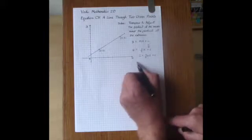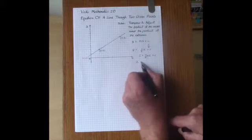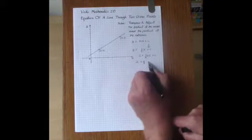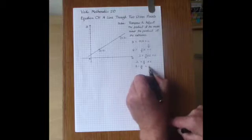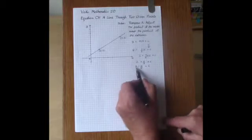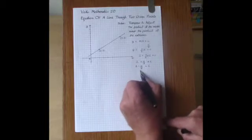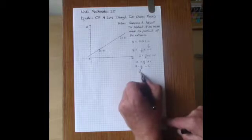So we've got 2 equals 6 fifths plus C. So we've got 2 take away 6 fifths is C and that's 10 fifths take away 6 fifths is 4 fifths. So C is 4 fifths.